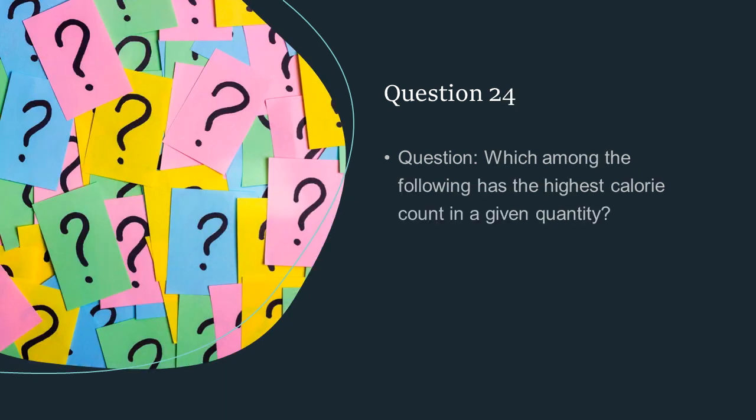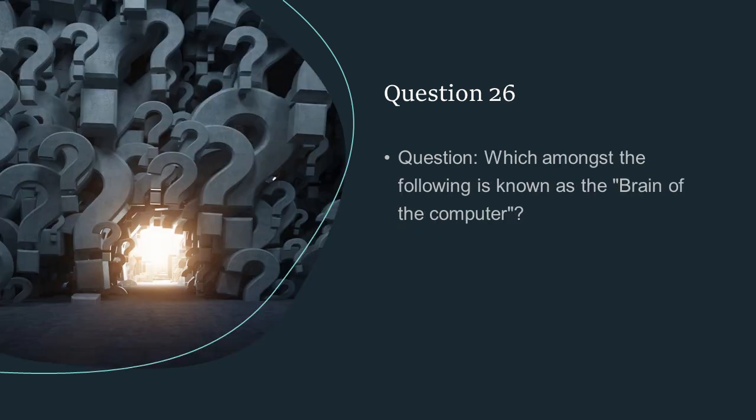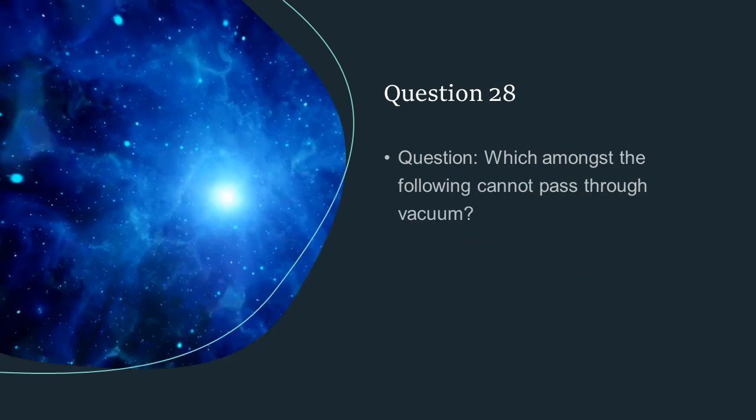Which among the following has the highest calorie count in a given quantity? Fat. The deficiency of iodine causes the following disease: Goiter. Which amongst the following is known as the brain of the computer? Control unit. The largest asteroid is Ceres. Which amongst the following cannot pass through vacuum? Sound.